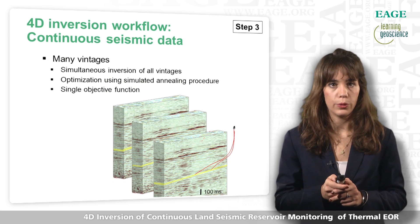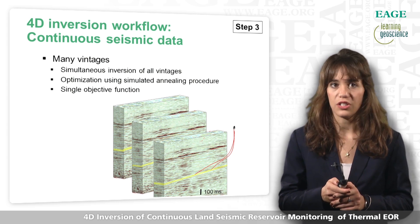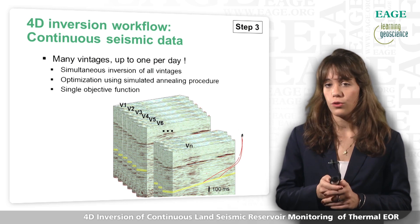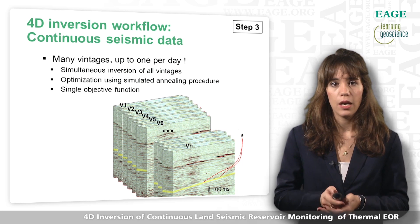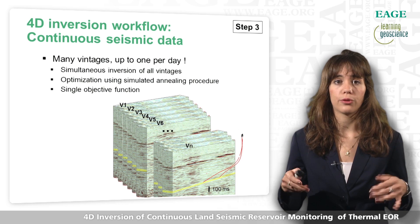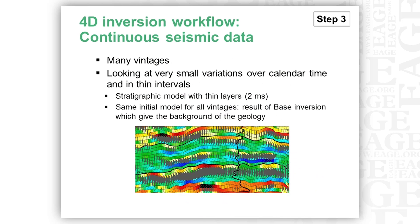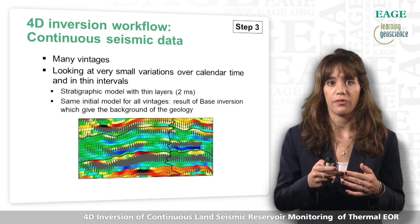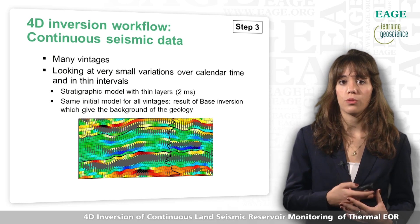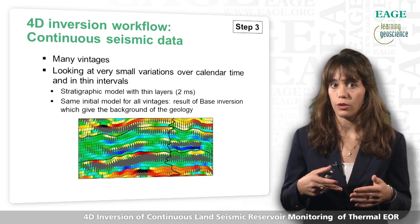The third step, and the most important, is the 4D inversion of the continuous seismic data. There are several key points. First, we're not dealing with several vintages but with many vintages — up to one per day — though we can stack them on a weekly or monthly basis. This calendar dimension is the real strength for the 4D inversion; we will simultaneously invert all vintages to take into account this rich calendar dimension. The inversion uses a simulated annealing procedure with a single objective function. Second, we're looking at very small variations over calendar time and on thin intervals, so the layers of the stratigraphic model are very thin, about 2 ms, and the same initial model is used for all vintages. The initial model is the result of the base inversion, which gives us the geological background of the reservoir.